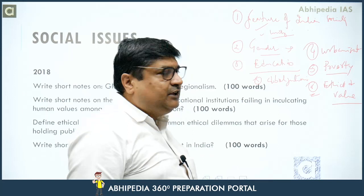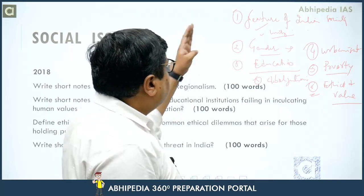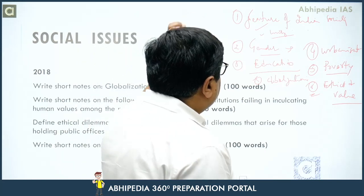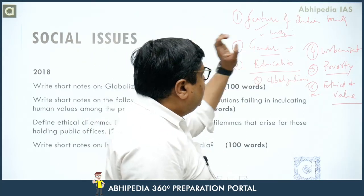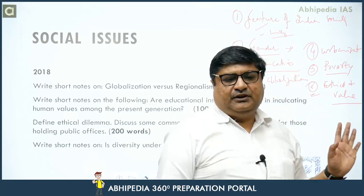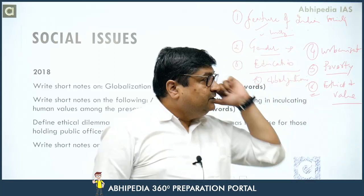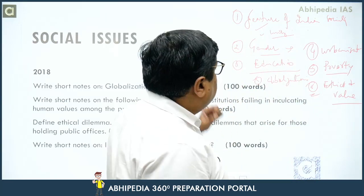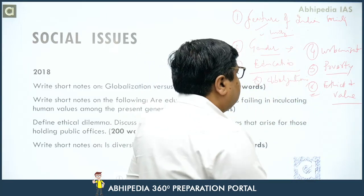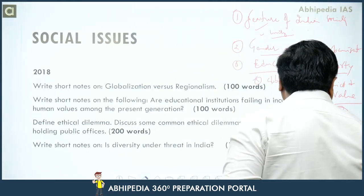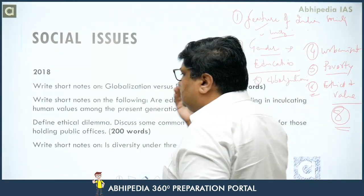So how many areas do we have? Features of Indian society, gender issues, education, globalization, urbanization, poverty, and ethics and values — a total of 8 topics in social issues. You can see questions in the paper coming from these areas.